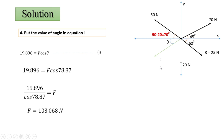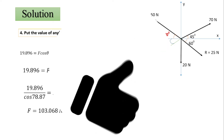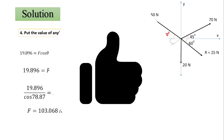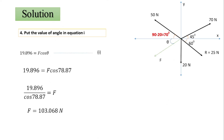In this way we can calculate the unknown force if the resultant is given. The only difference in this type is that we write summation of Fx equals R·cosθ and summation of Fy equals R·sinθ. Please like this video and subscribe to our channel. Thank you very much.